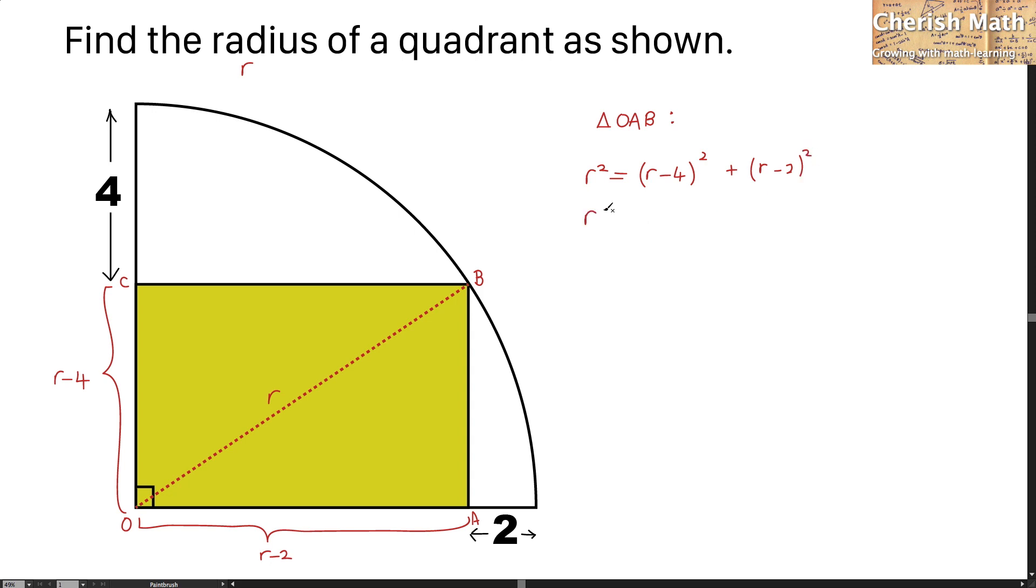That is r squared equals r squared minus 8r plus 16, plus r squared minus 4r plus 4.